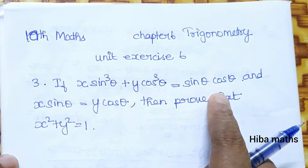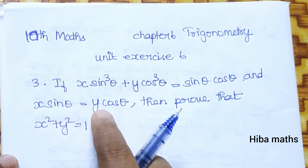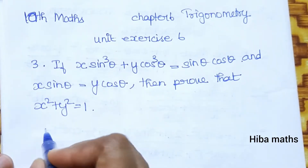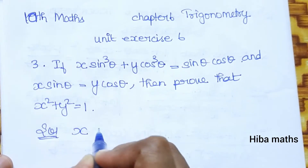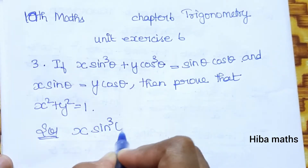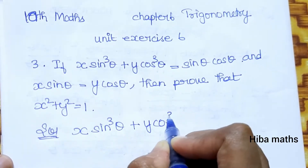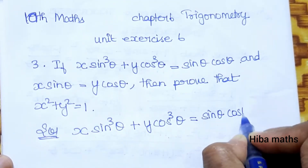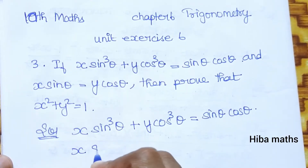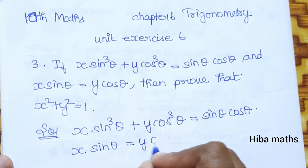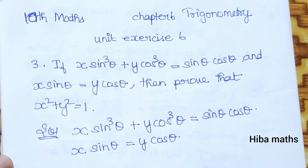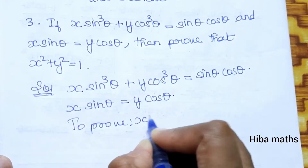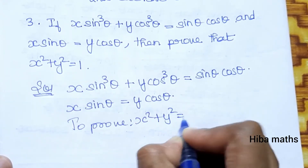Here we have the equation. The given condition is x sinθ = y cosθ, and we will prove that x² + y² = 1. The solution model uses x sin³θ + y cos³θ = sinθ cosθ as the starting condition.